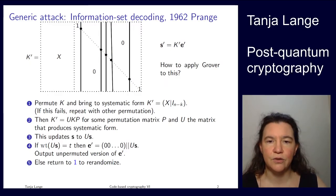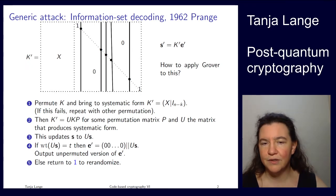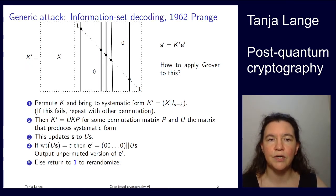We've now seen a whole bunch of attacks on code-based cryptography, in particular the different forms of information set decoding. And then you might be wondering how does this fit into a course on post-quantum cryptography? So what happens when we look at code-based cryptography under attacks with a quantum computer?